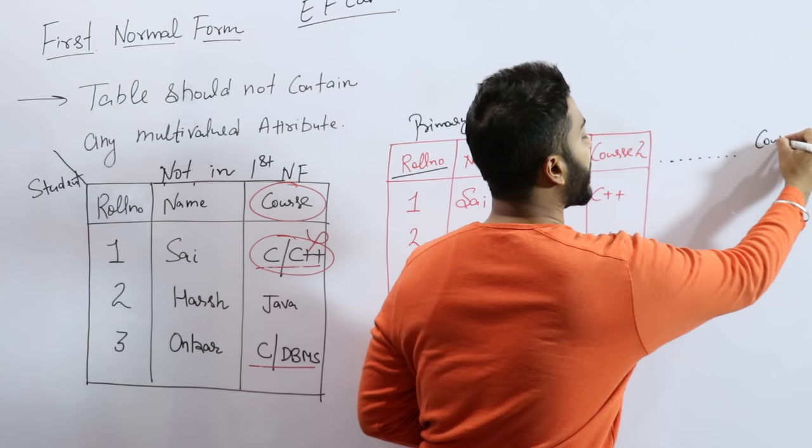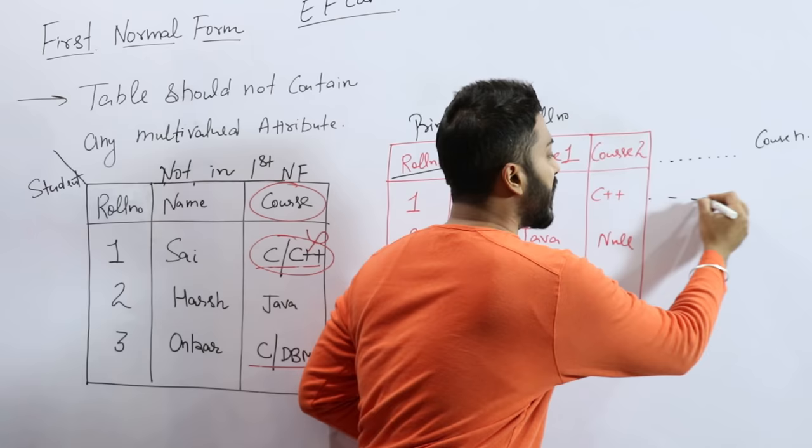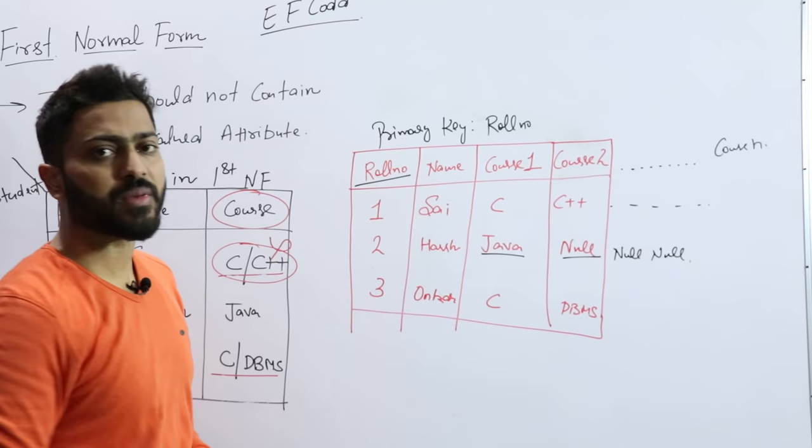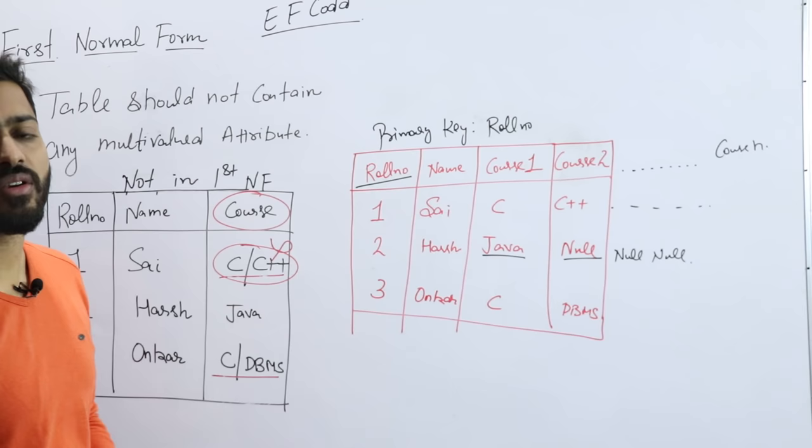But there will also be a student who is enrolled in only one course. So what will you write? Null. If you represent null so many times here, then overall in the table there will be a large number of nulls in the representation, which is not a good representation. So you can represent in the third format.